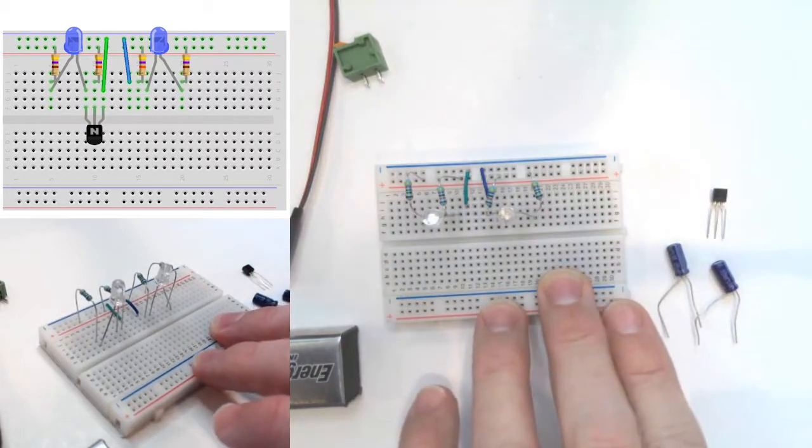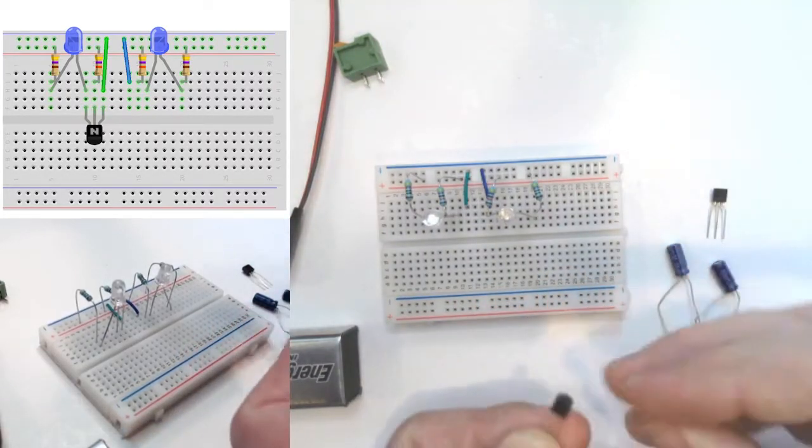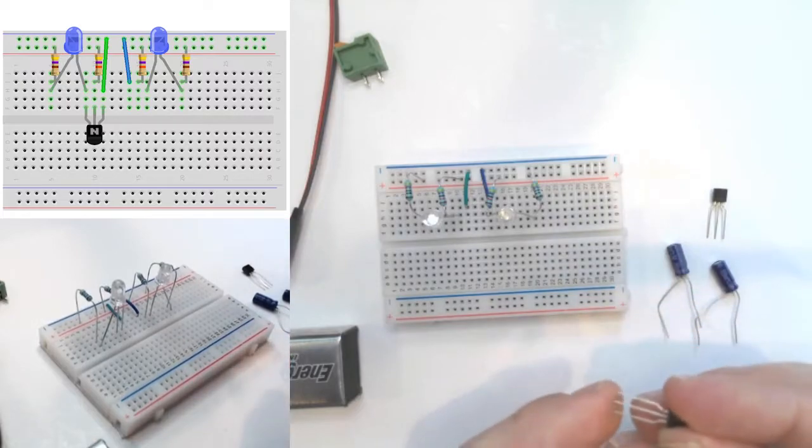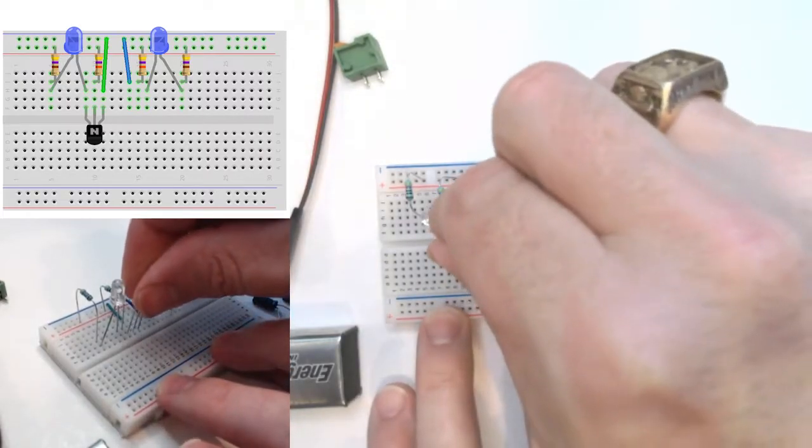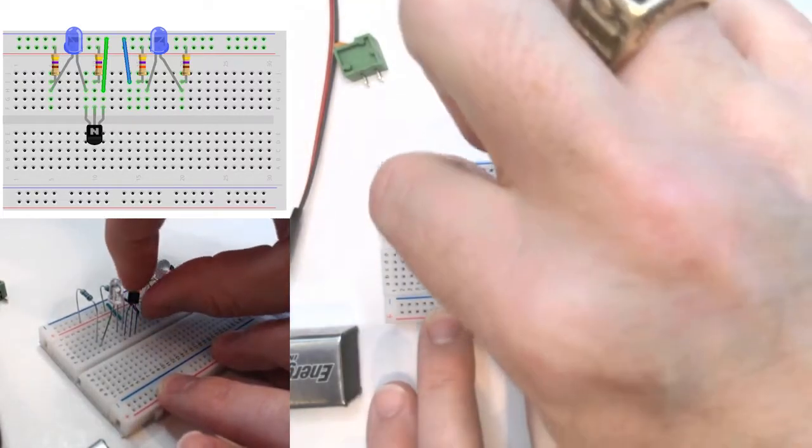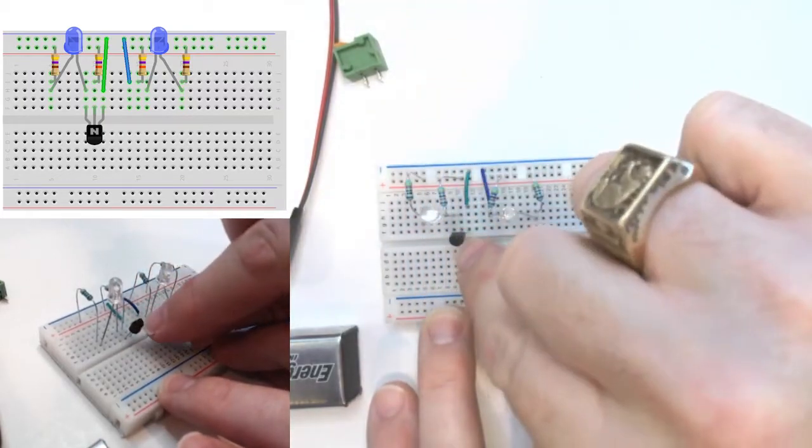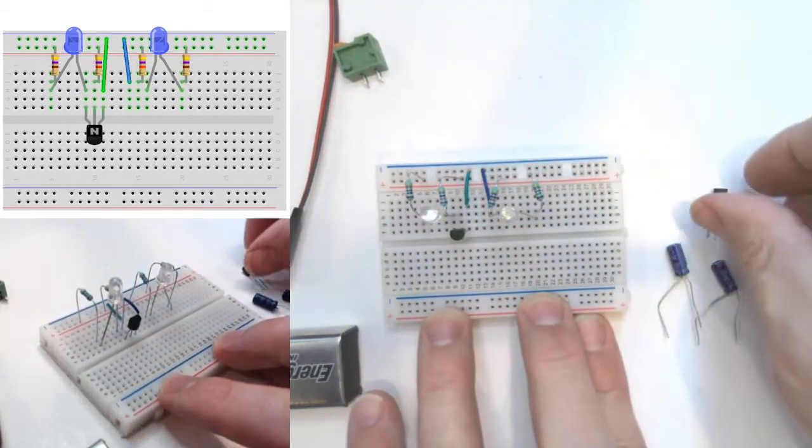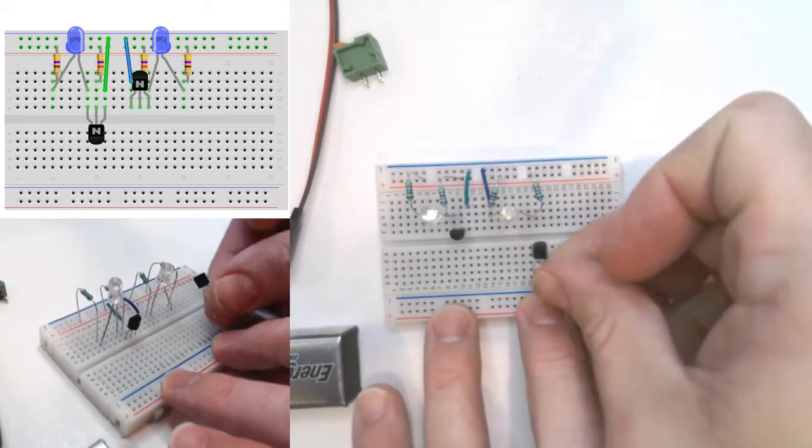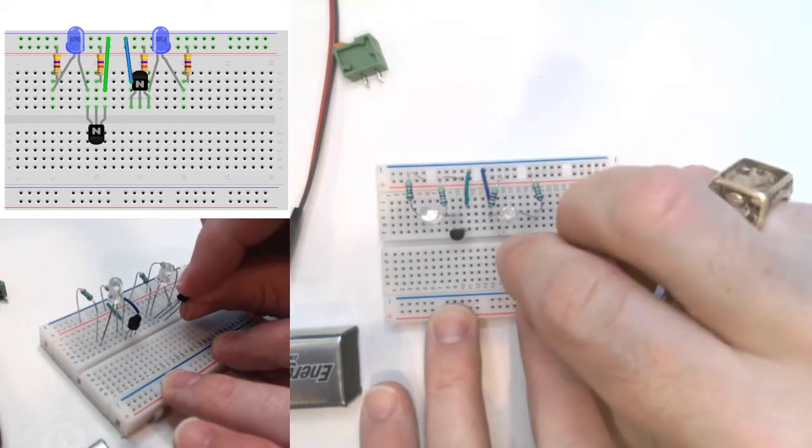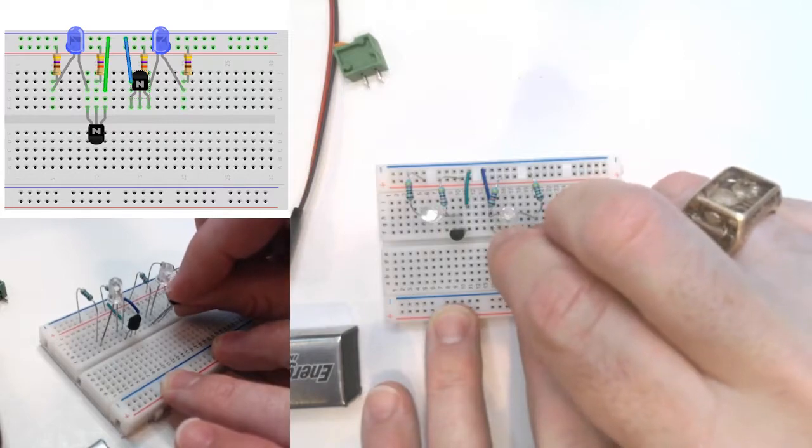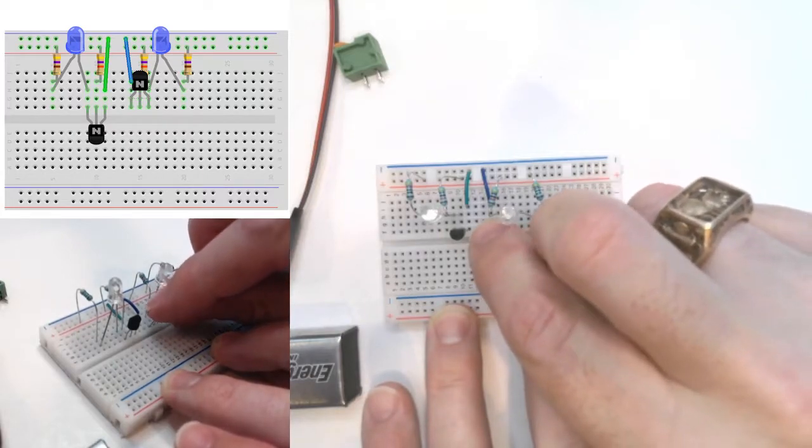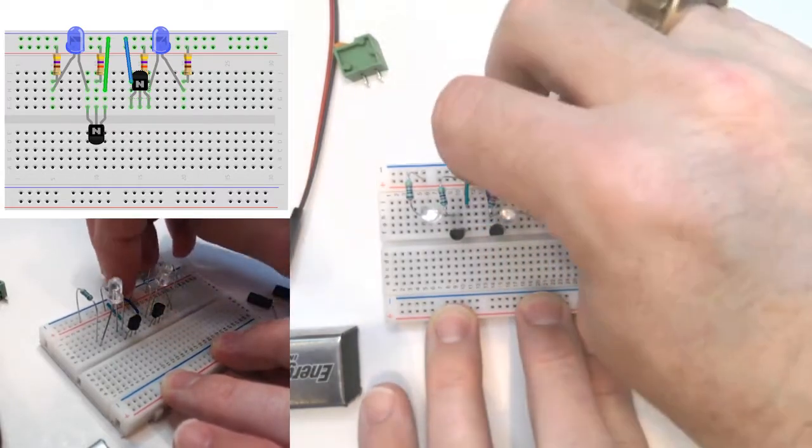Next, we'll put in the NPN transistor with the three wires. Those will go in the row starting with the LED, the resistor, and then the jumper wire. And then the one on the other side is inverted because we want the collector to go from the LED and the emitter to go to the negative terminal.